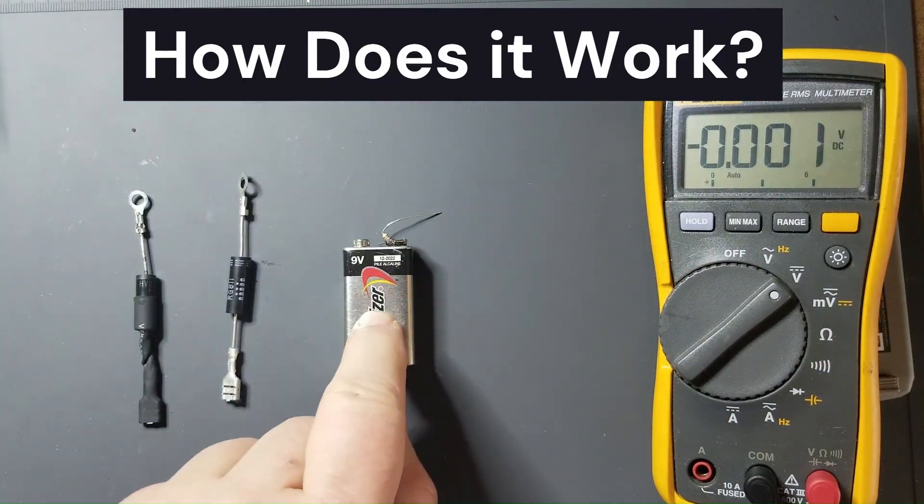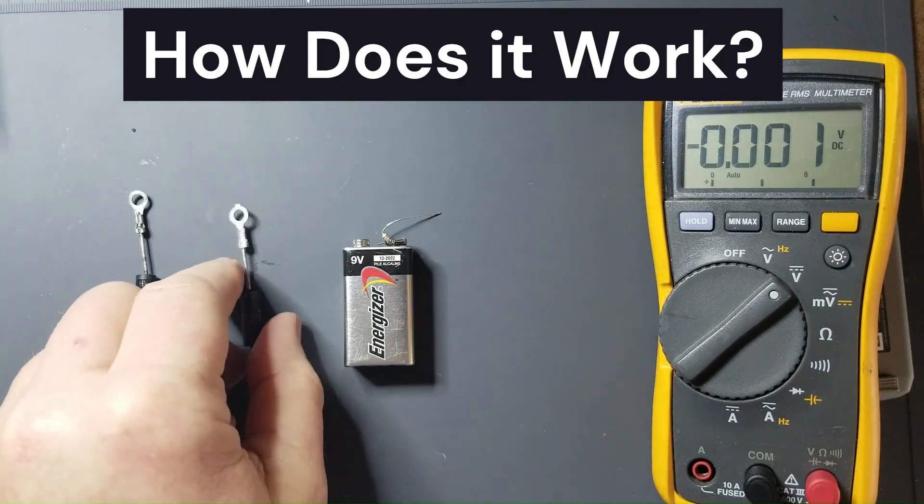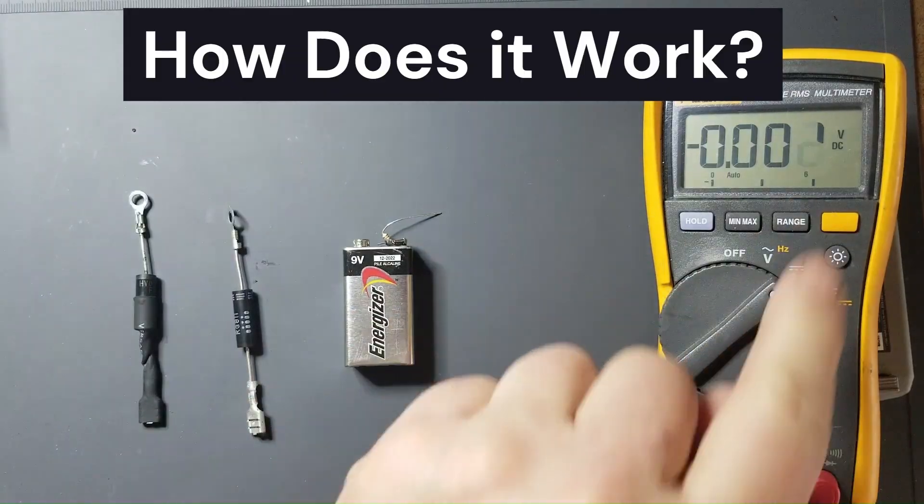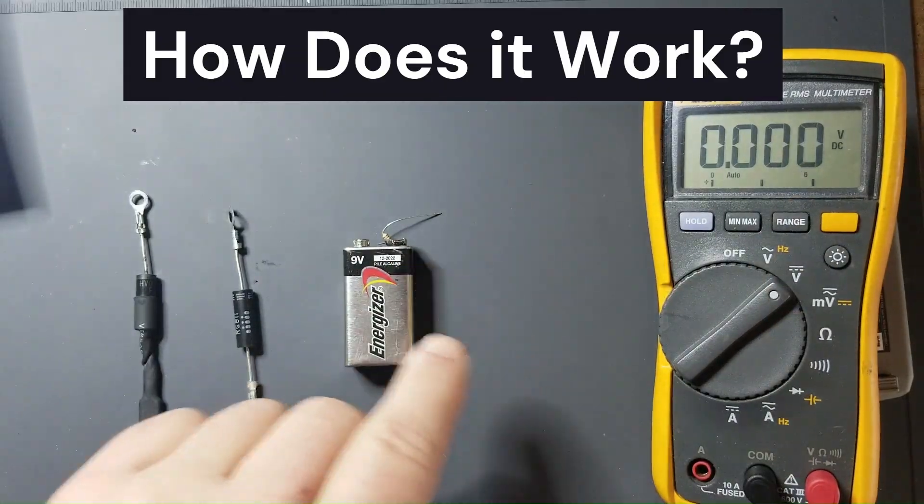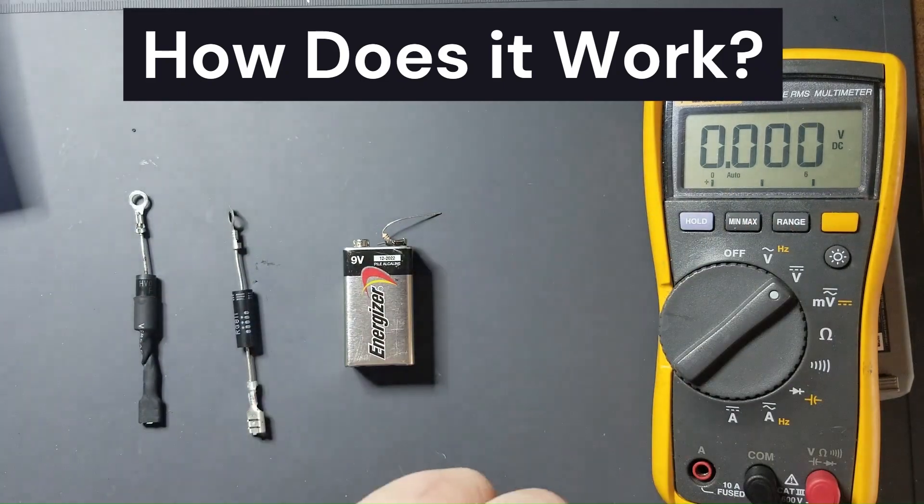This tester will test microwave diodes the correct way using forward voltage drop. This is opposed to using a 9 volt battery in series with a multimeter which is inaccurate, non-intuitive, and gives a different reading for each type of multimeter you use.